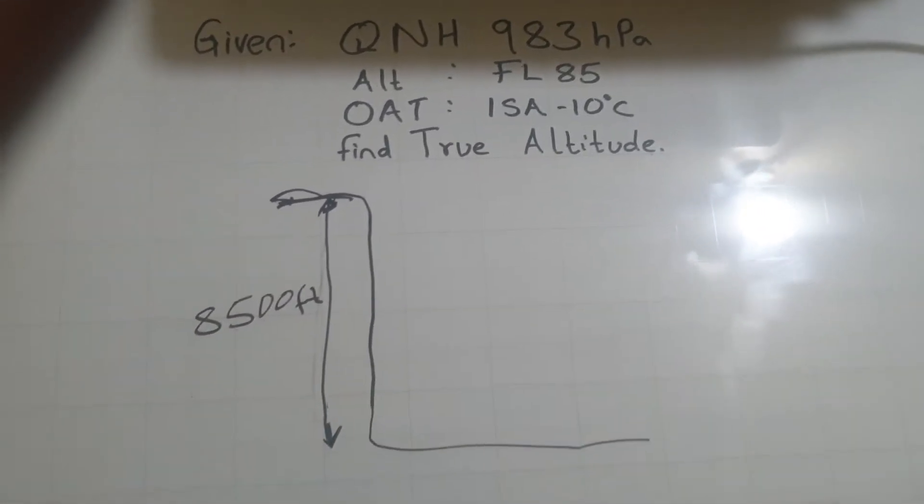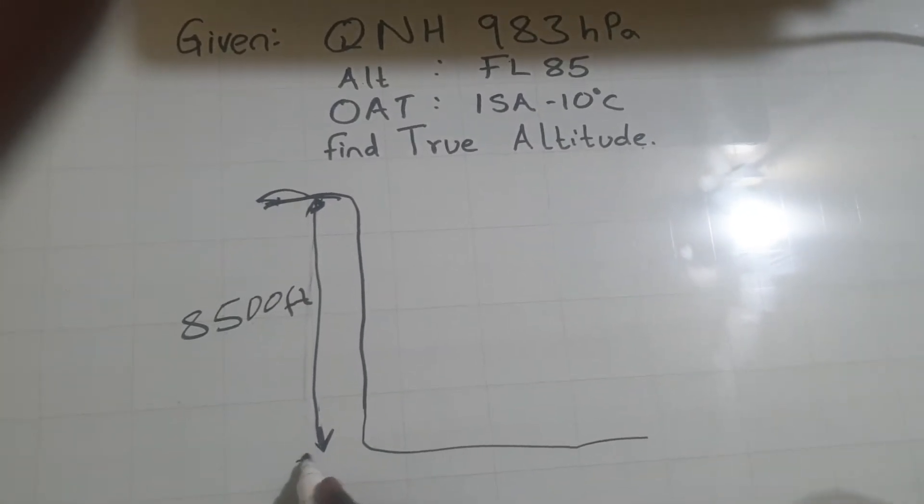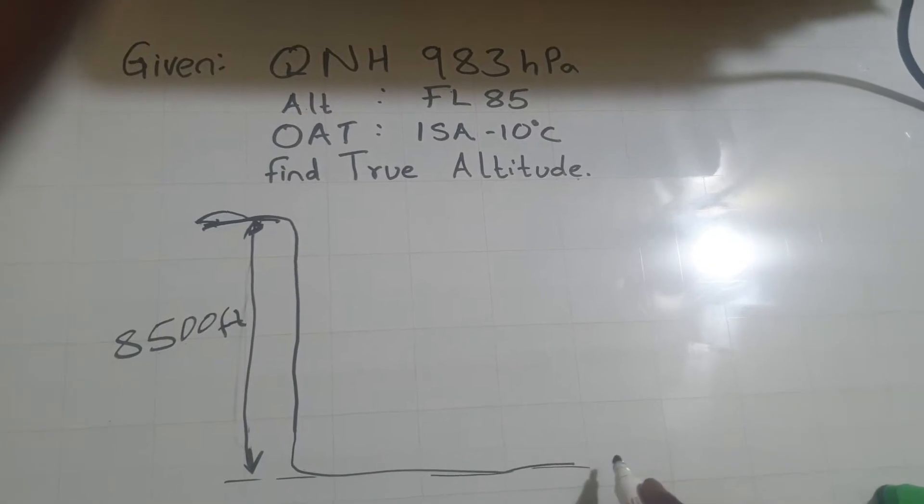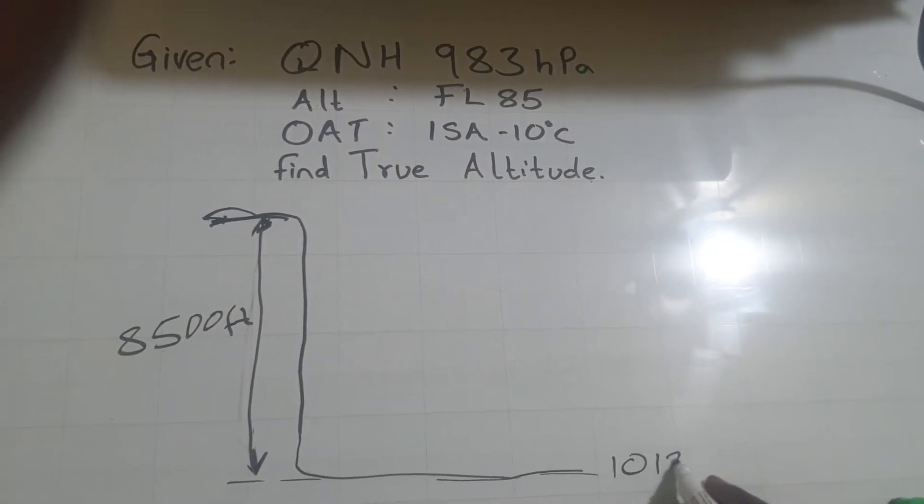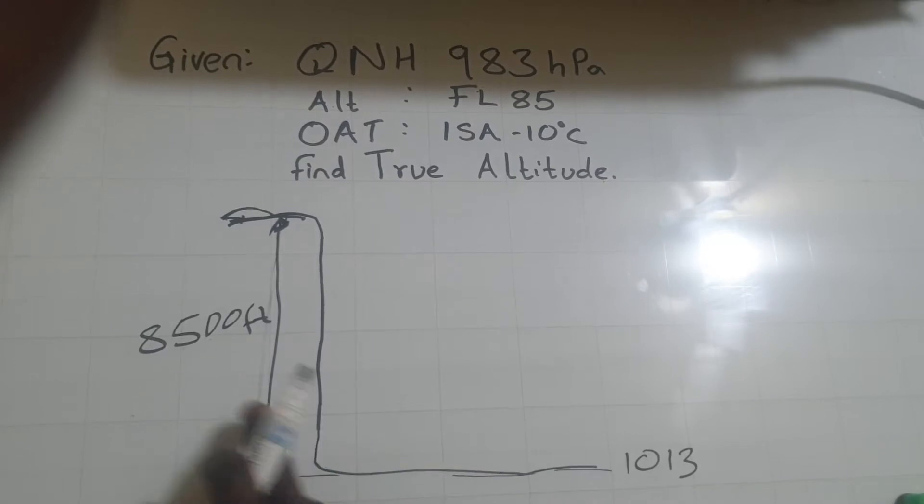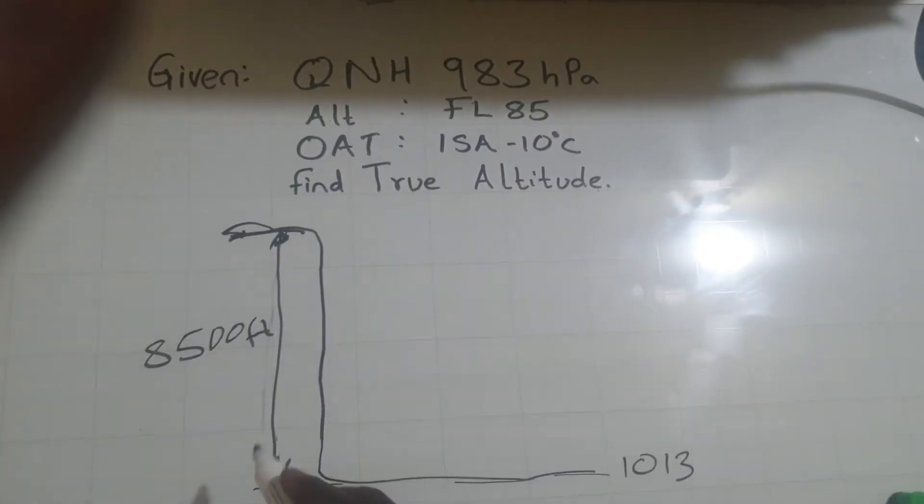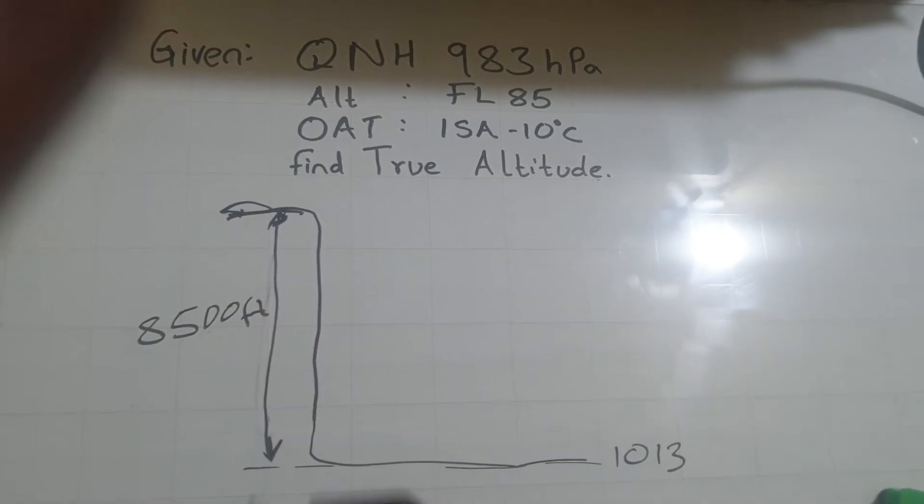And because it's flight level, it is measured from mean sea level setting, which is 1,013. So height above 1,013 is what we call as flight level. So that is your height, 8,500.